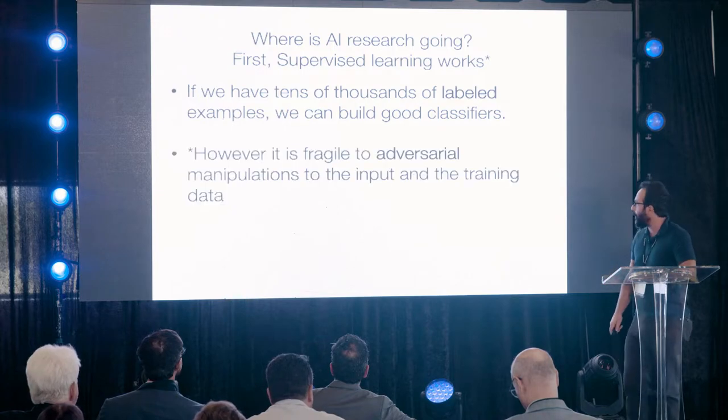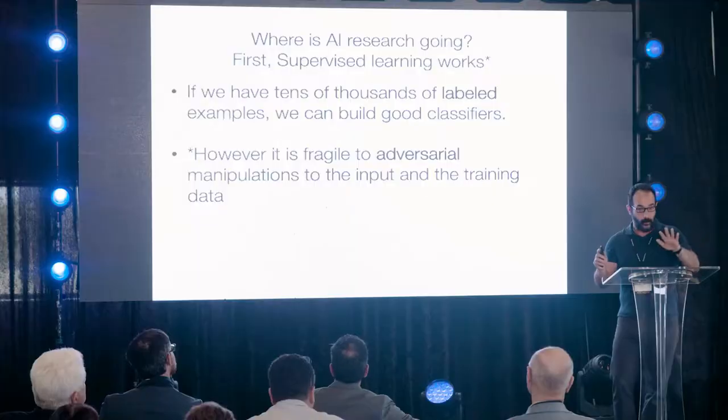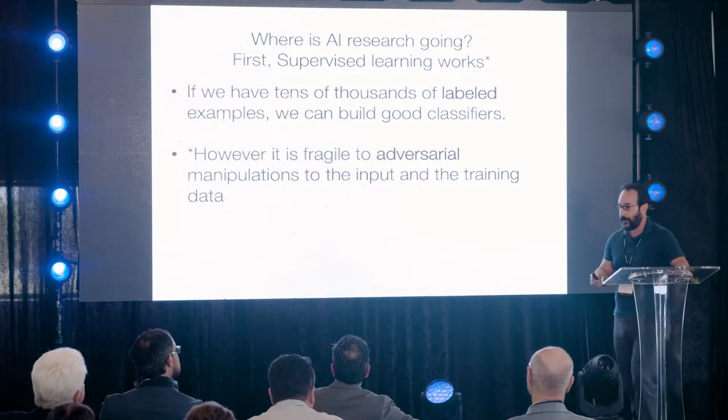But there are a lot of problems with supervised learning. The first problem is that these models work well in-distribution, but they're very fragile every time something changes — whether you change your sensor, or somebody is manipulating your data. That's called adversarial examples, and there's a lot of research going on in this space.